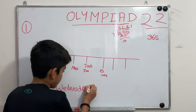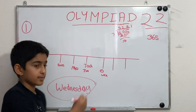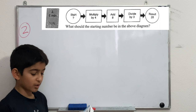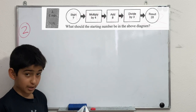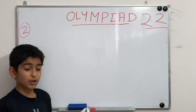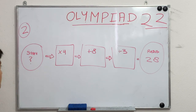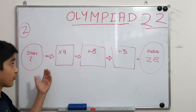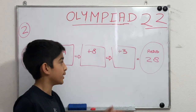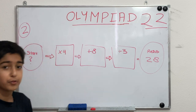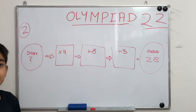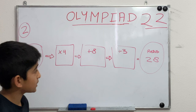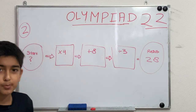The second problem asks: what should the starting number be in the diagram? Let's draw the diagram. We start with a number, multiply it by 4, then add 8, then divide by 3, and the result is 28. To find the starting number, we work backwards.